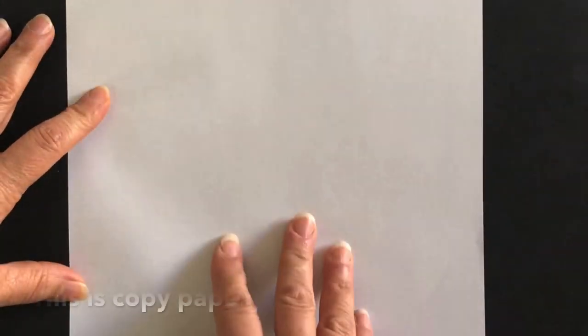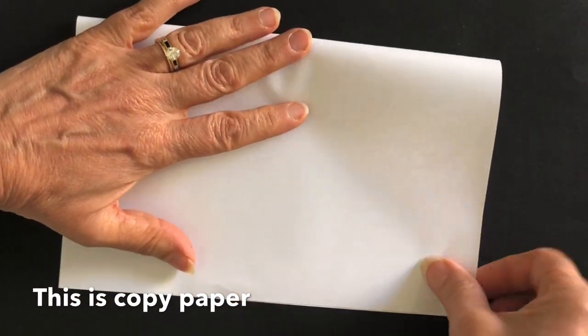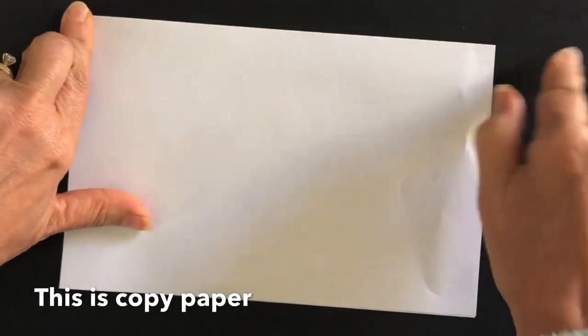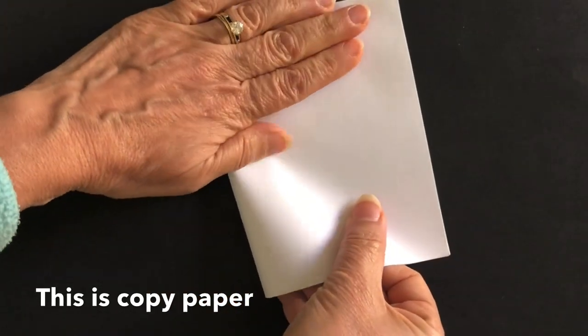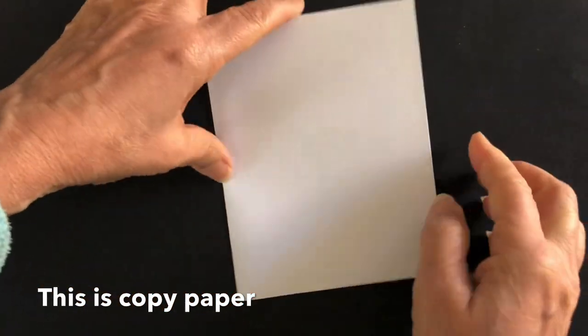I'm going to start with my paper vertical and fold in half. Do a really nice crease in the middle and then I'm going to fold it over again. Make sure your creases are really pressed.